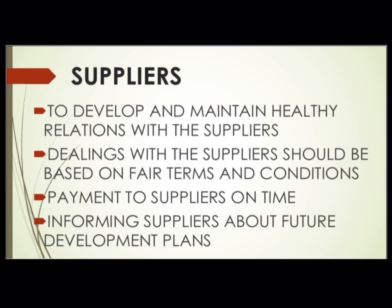Next: suppliers. Suppliers koun honge — jo different inputs aur raw materials supply karenge to the business organization. Social responsibilities towards suppliers: first, to develop and maintain healthy relations with the suppliers — suppliers ke saath peaceful aur healthy relations develop karna aur maintain karna. Next, dealing with suppliers should be based on fair terms and conditions. Next, payment to suppliers on time — jo bhi raw material supply kiya ho uske liye unko timely payment karna. Next, informing the suppliers about future development plans.